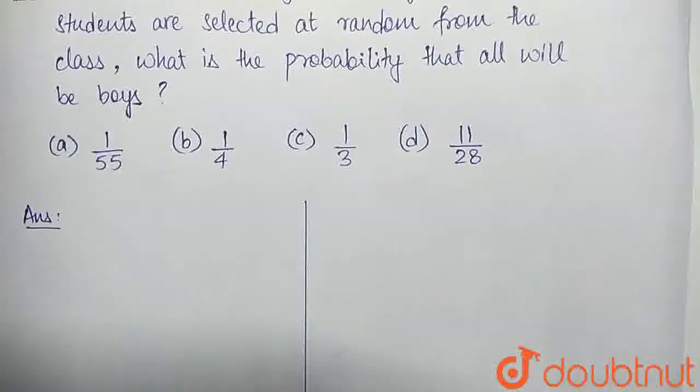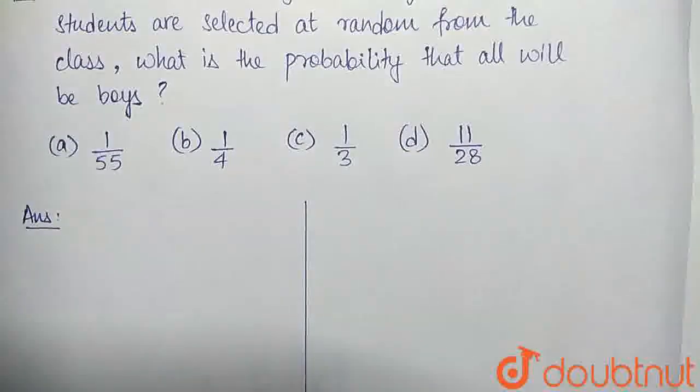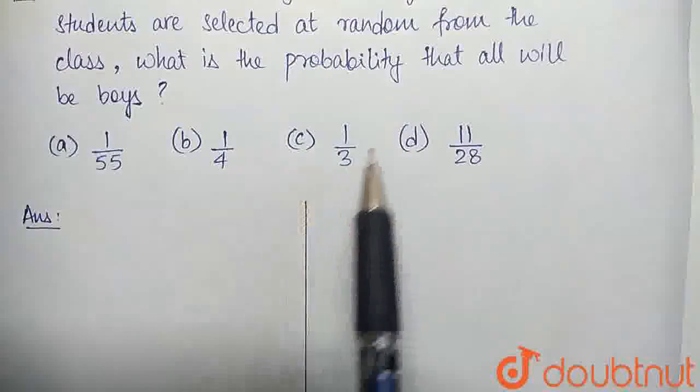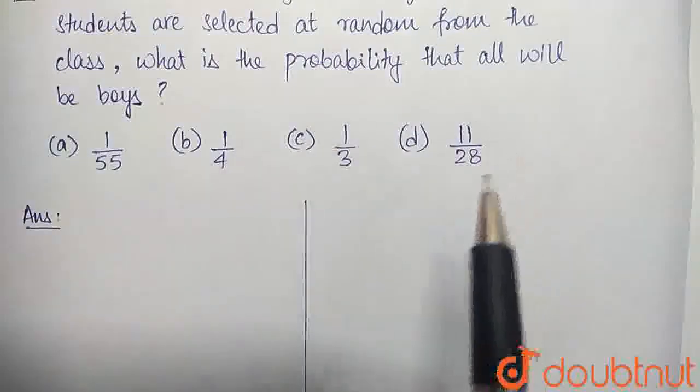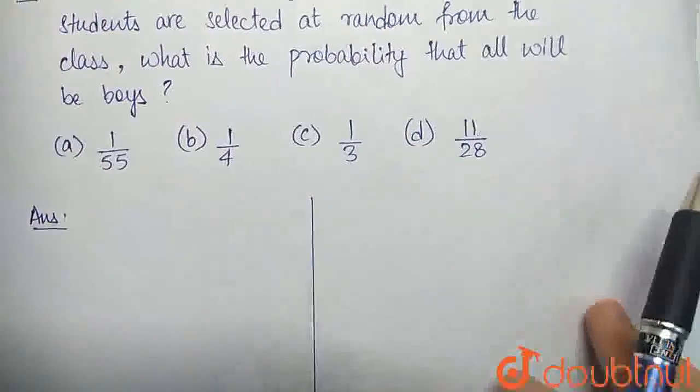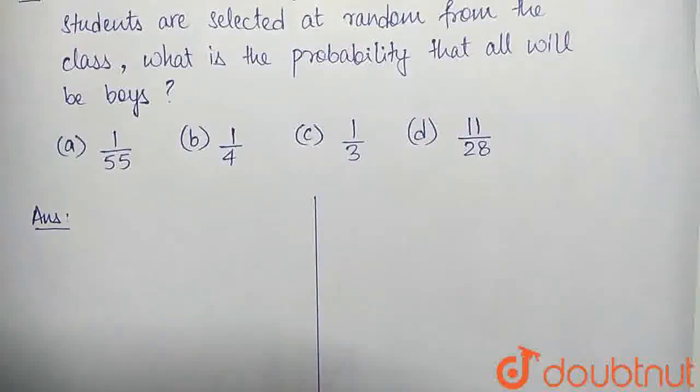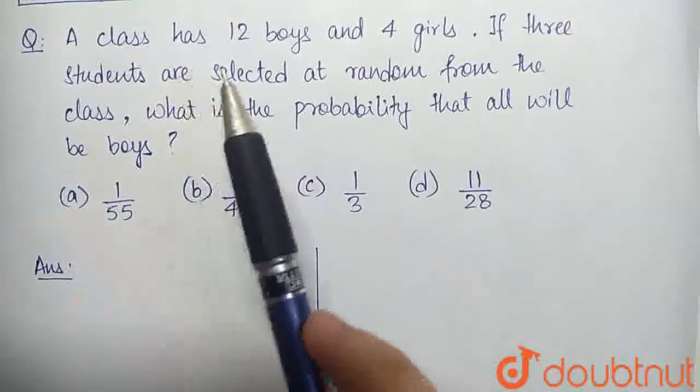So now first of all, I'd like to clarify. There are 3 events taking place here. We are selecting a student at random, but that is occurring 3 times. And each one of those events is dependent on the ones before. For example,